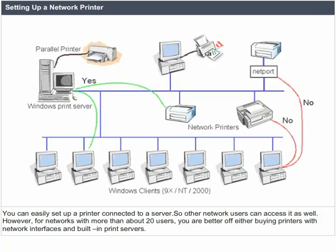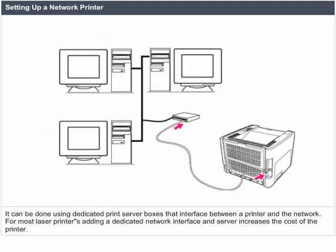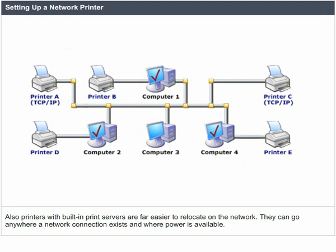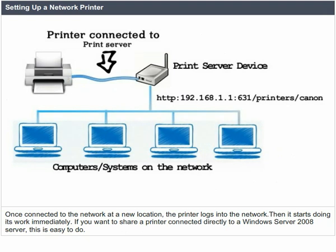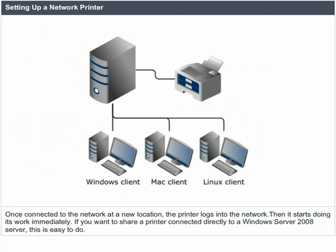Setting up a network printer. You can easily set up a printer connected to a server so other network users can access it. However, for networks with more than 20 users, you are better off buying printers with network interfaces and built-in print servers, or using dedicated print server boxes. Adding a dedicated network interface increases the cost of the printer, but printers with built-in print servers are far easier to relocate on the network — they can go anywhere a network connection exists. Once connected at a new location, the printer logs into the network and starts doing its work immediately.